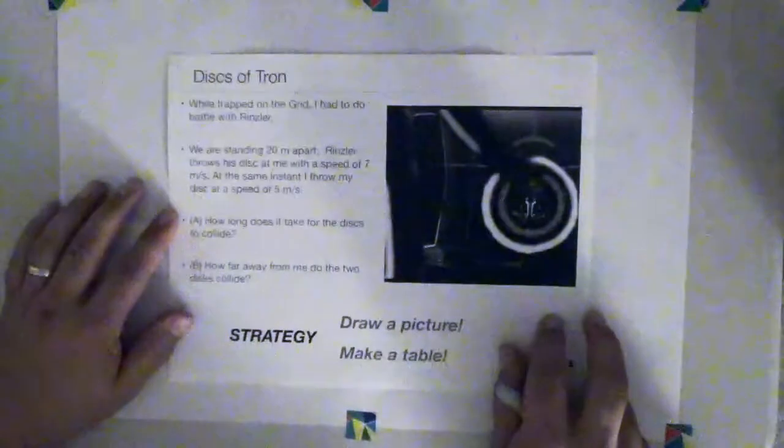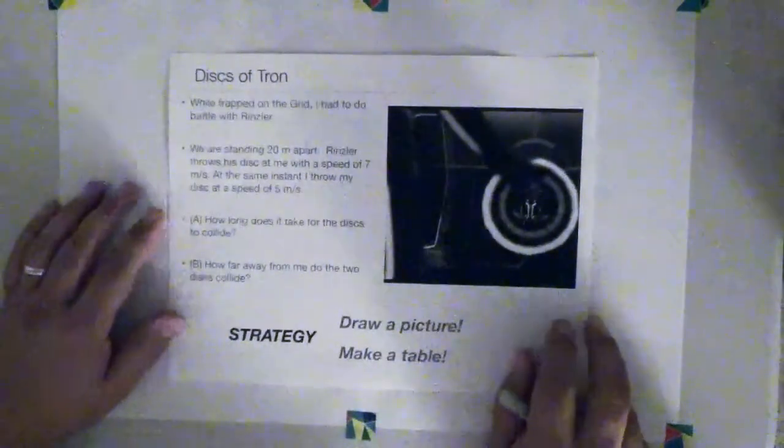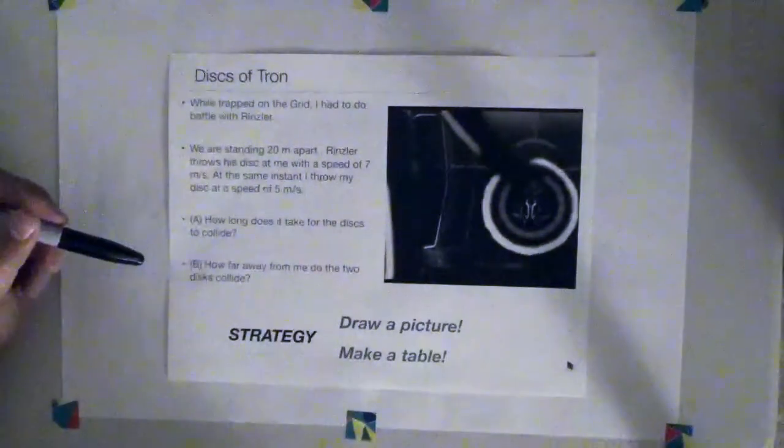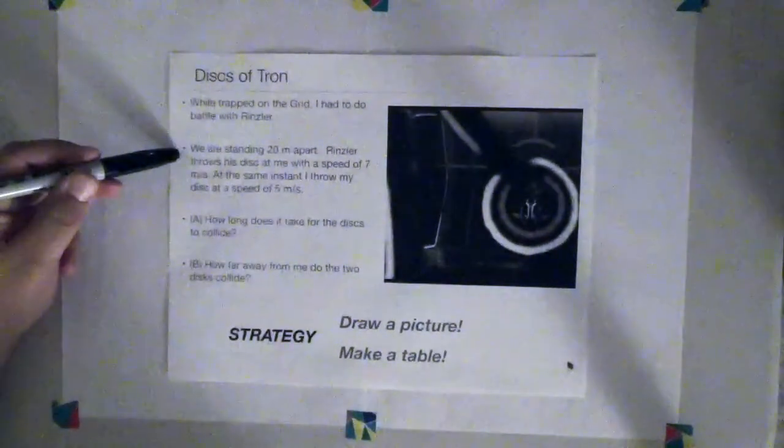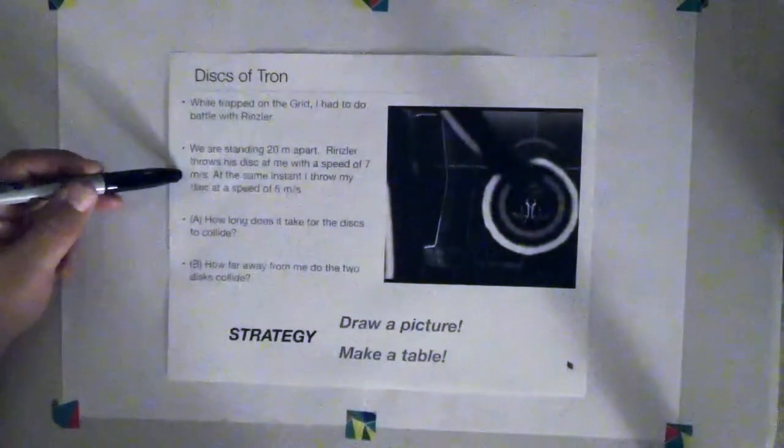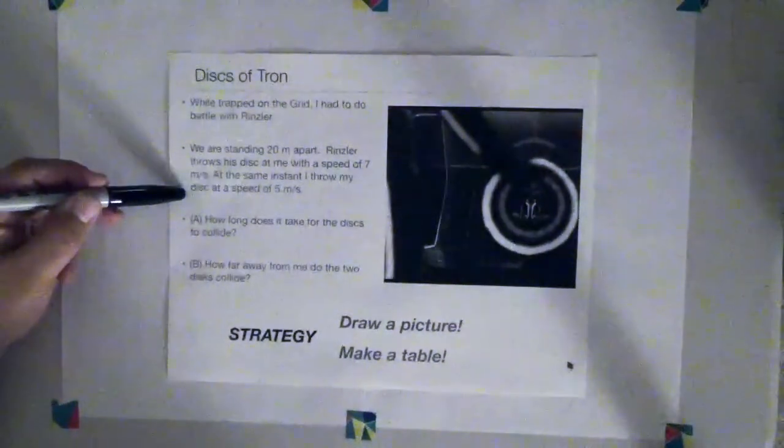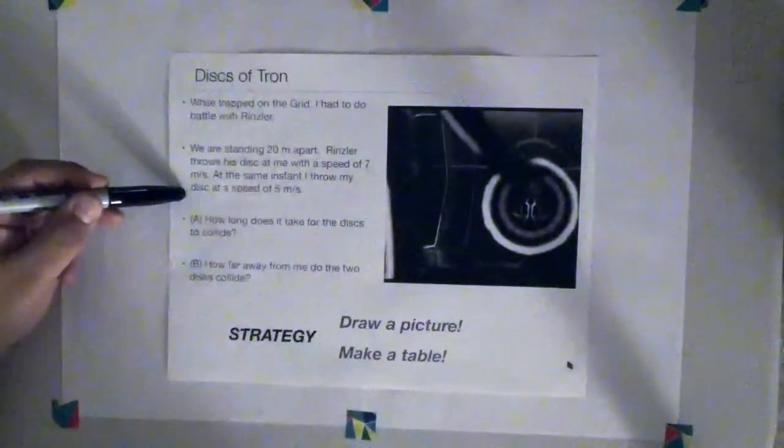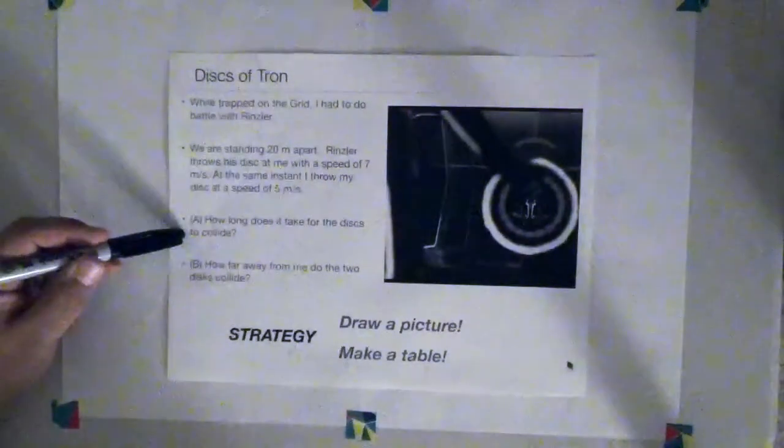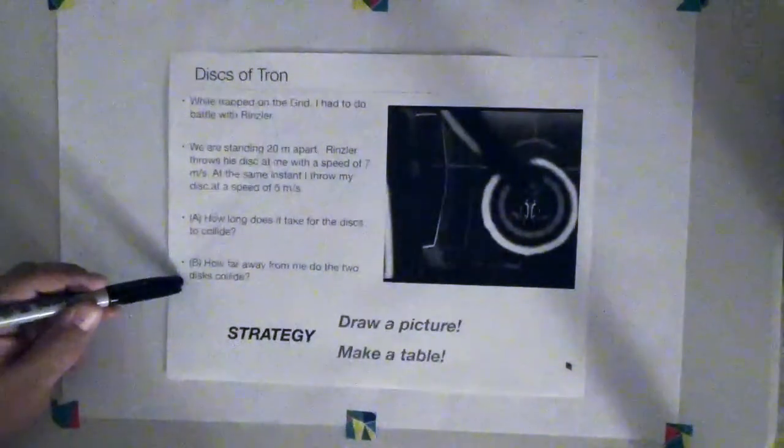So the first problem is a problem from one-dimensional kinematics. This is a problem based on the movie Tron. As most of you know by now, I'm a big movie buff. So imagine I am trapped on the grid where I have to do a ring battle with Rinsler. We are standing 20 meters apart and Rinsler throws his disc at me with a speed of 7 meters per second. At the same instant that he throws his disc, I throw my disc also with a speed of 5 meters per second. The two things we are asked to find is how long does it take for the two discs to collide and how far away from me do the two discs collide.